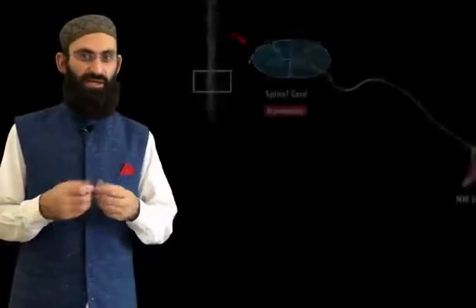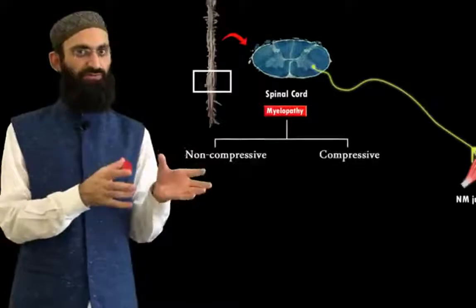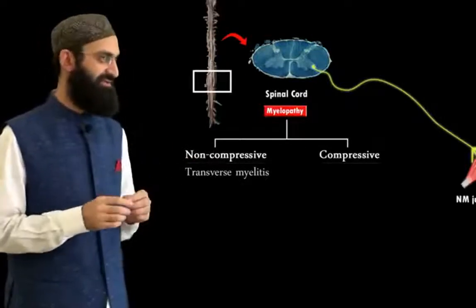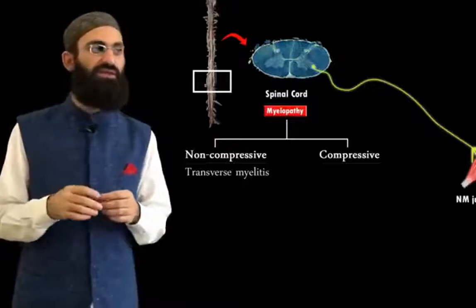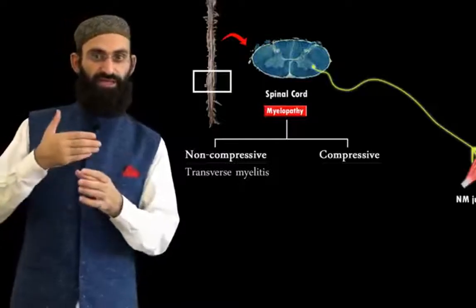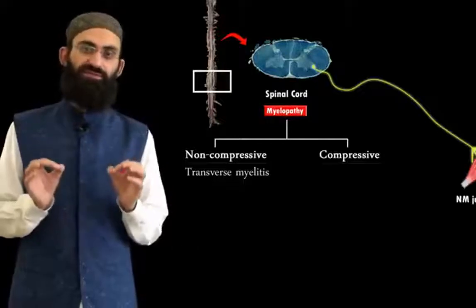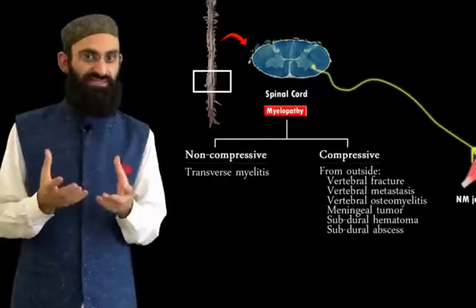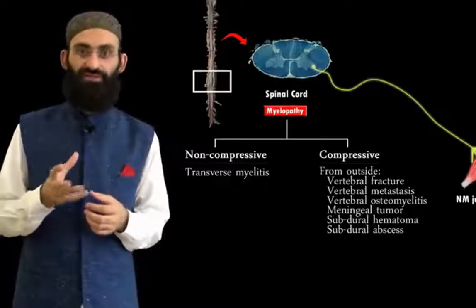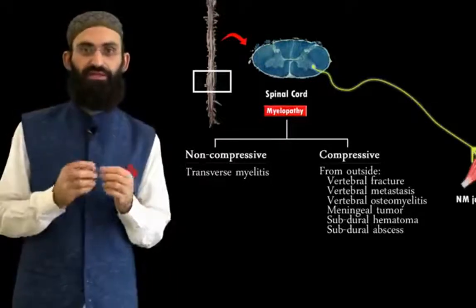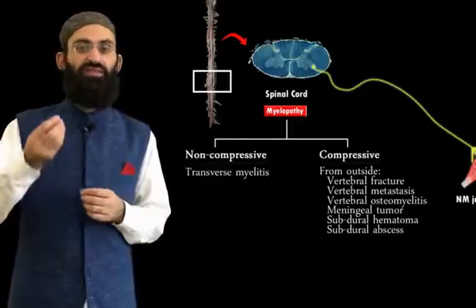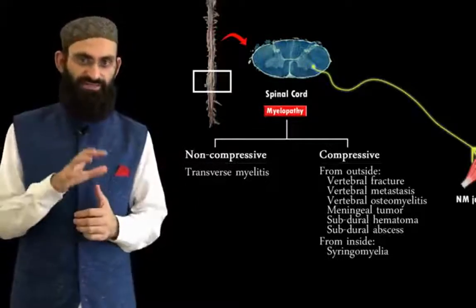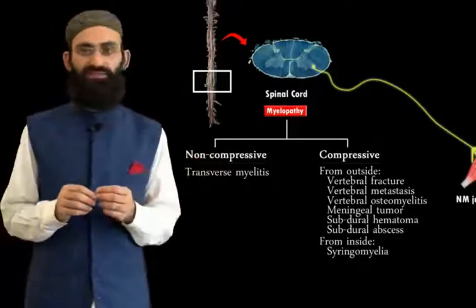This presentation indicates myelopathy, which is broadly categorized into non-compressive and compressive myelopathy. An example of non-compressive myelopathy is transverse myelitis, which has many causes. Compressive myelopathy results from compression of the spinal cord from outside — such as vertebral compression fractures, vertebral metastasis, vertebral osteomyelitis, meningeal tumors, subdural hematoma, or subdural abscess — or from within, for example in syringomyelia, where cavity formation causes compression of different tracts in the spinal cord. This concludes the discussion of paraplegia.